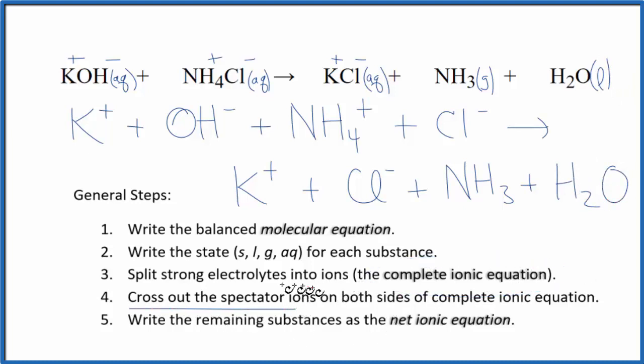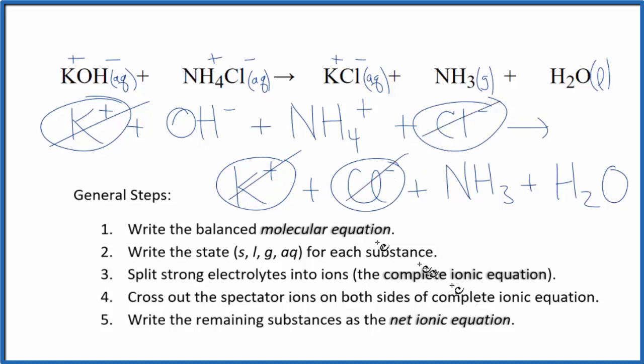Now we can cross out spectator ions. They're on both sides of the complete ionic equation. We're looking for things that are the same in the reactants and the products. So in the reactants, I see this potassium ion, again in the products. Cross that out. Chloride ion, products, chloride ion, cross it out. What remains, that's the net ionic equation for KOH plus NH4Cl.